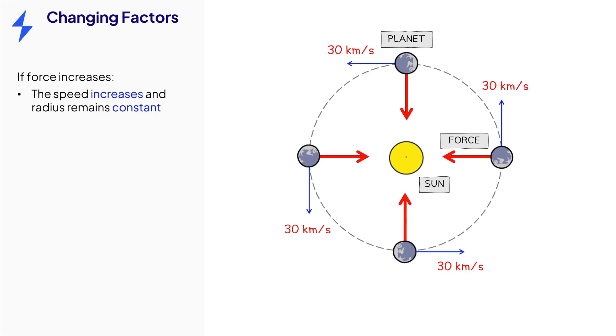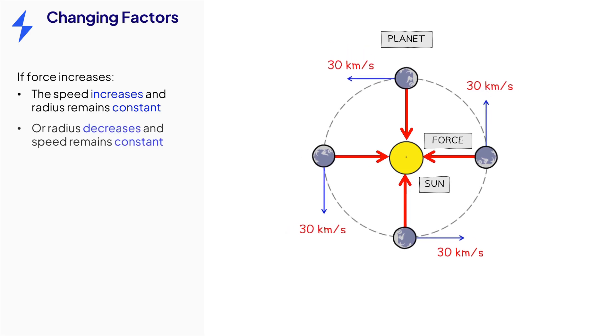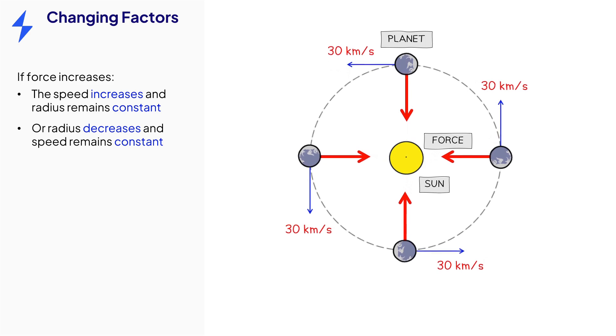Or, if we go back to our original setup and the force increases, then the radius of the circular path will decrease when speed remains constant.